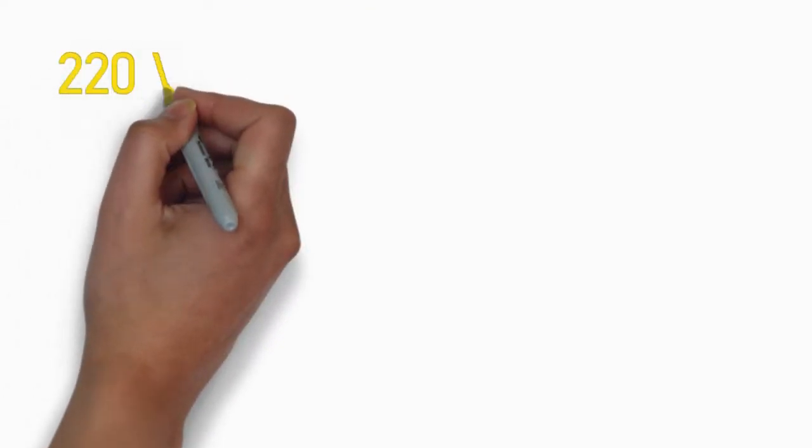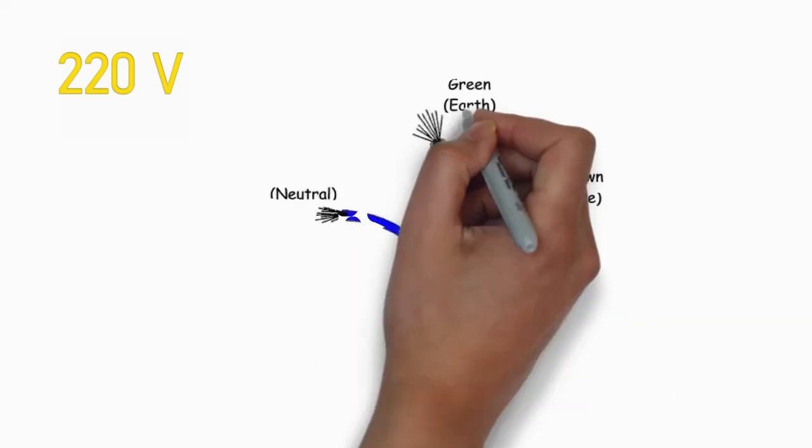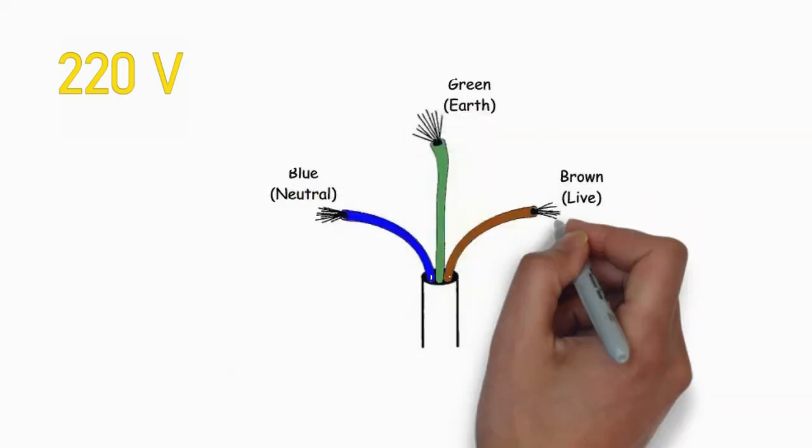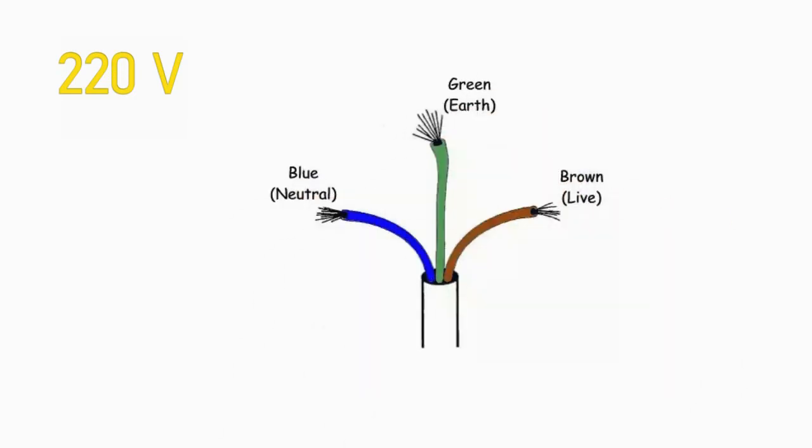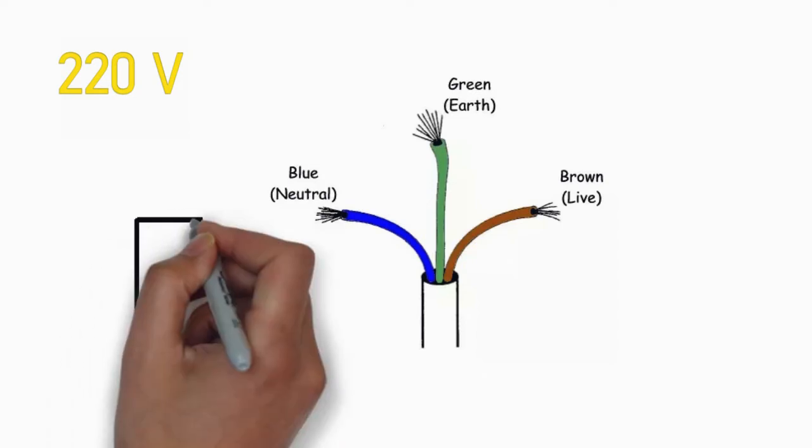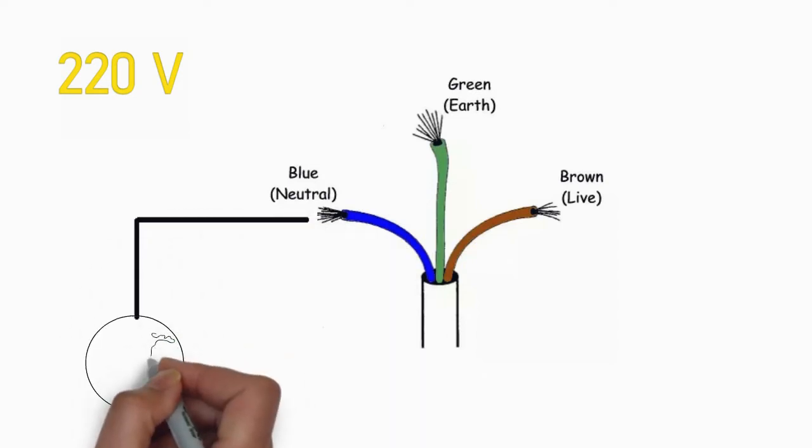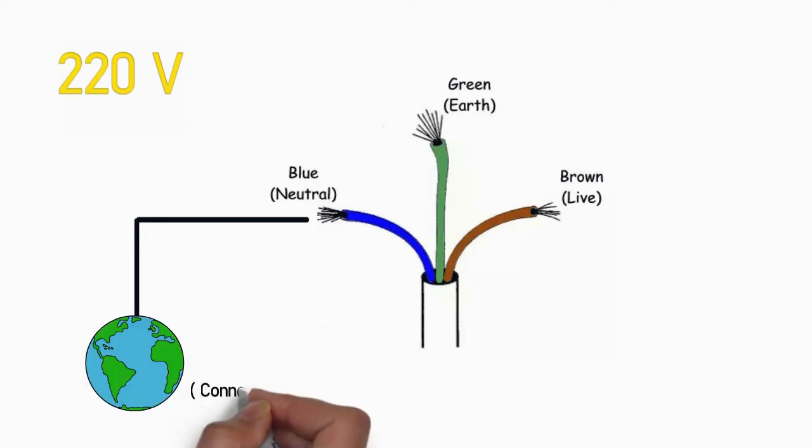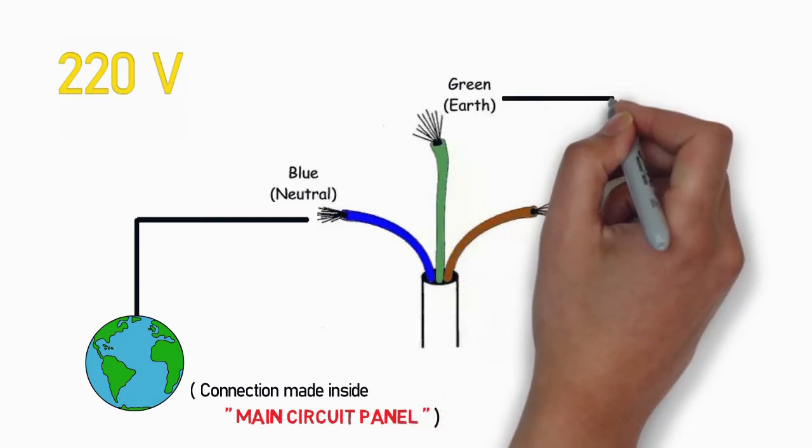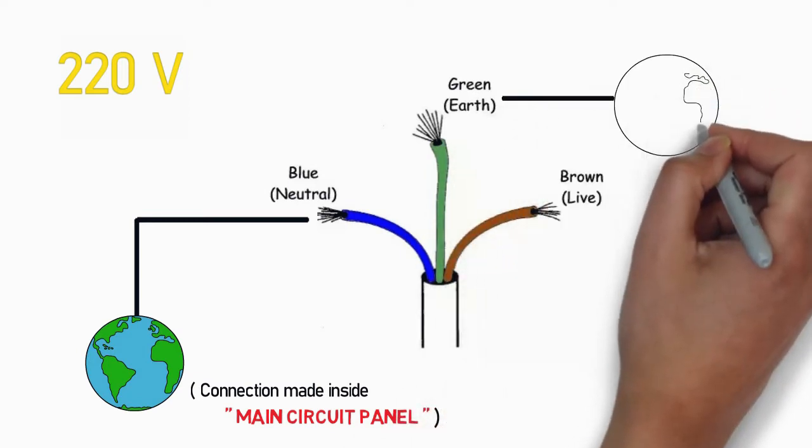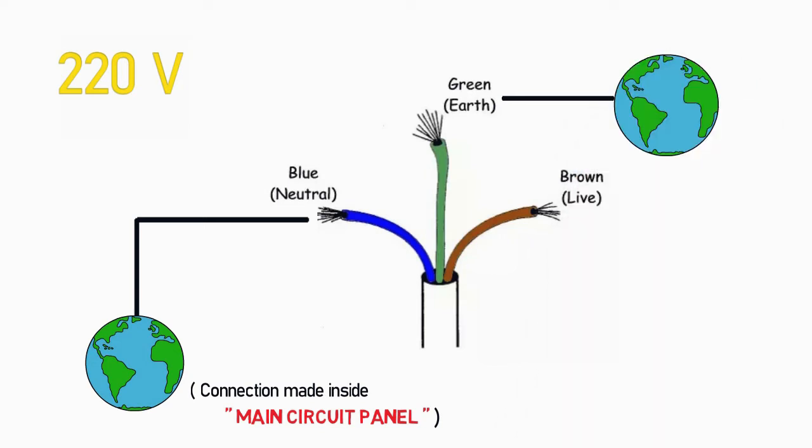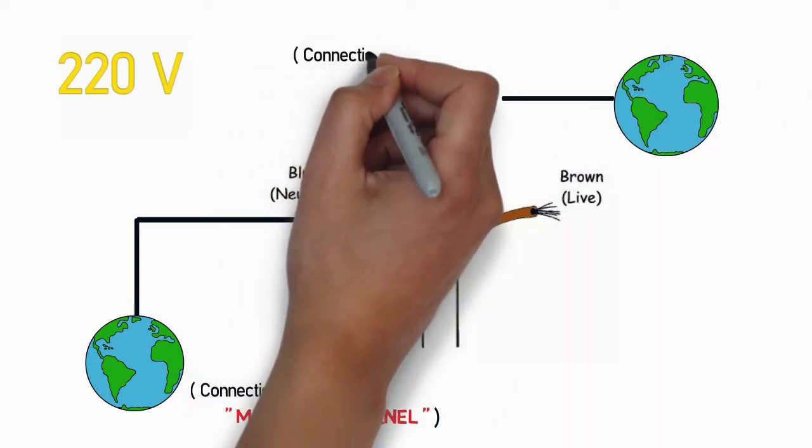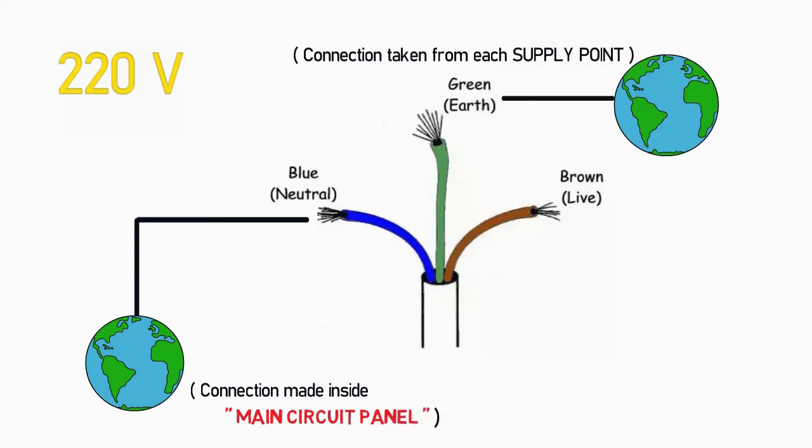Consider you have an AC supply of 220 volt at your home. Let us see how the three wires of a wall socket are connected. As you can see the neutral wire is connected to earth. But this connection is made at the main supply board and not at each plug points since some low current requirements do not require earthing.